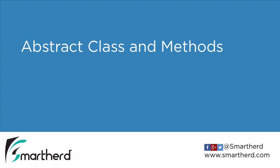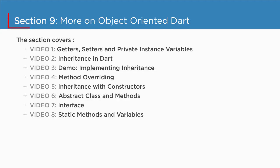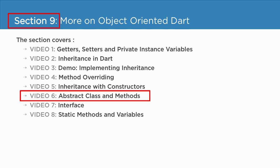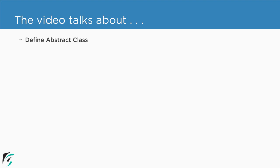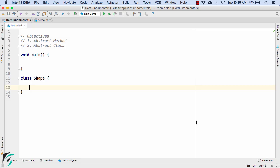We are in section 9, checking out the 6th video of this section. In this video we will look at what abstract classes are, how to define them, and also what abstract methods are. Head back to your editor — these are our video objectives.